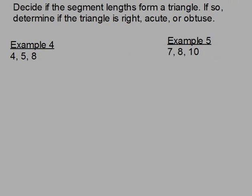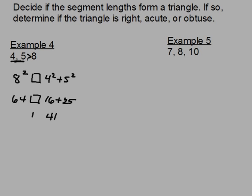Now here are examples where we actually have a triangle and need to classify it. For this triangle with sides four, five, and eight: four plus five is nine, which is greater than eight, so we do have a triangle. Now I use the Pythagorean theorem. Eight squared is 64, and four squared plus five squared is 16 plus 25, which equals 41. Since 64 is greater than 41 — C squared is greater than A squared plus B squared — this is an obtuse triangle.